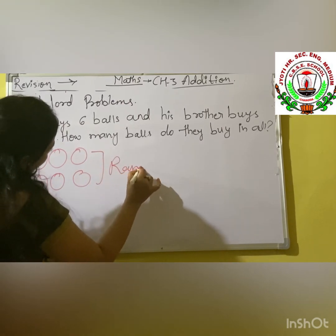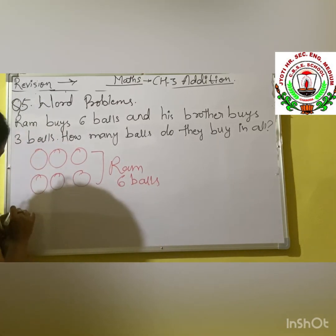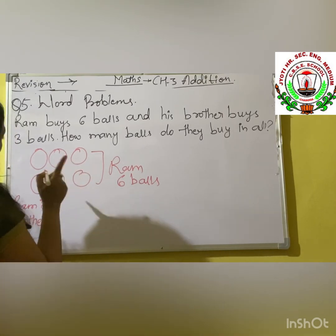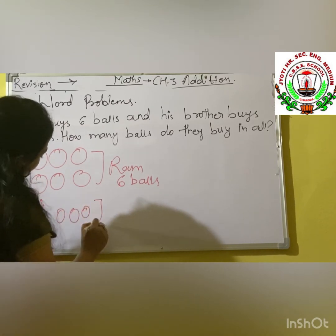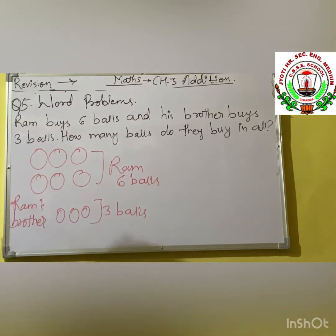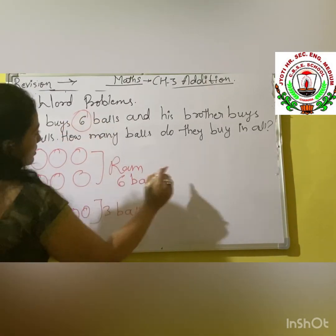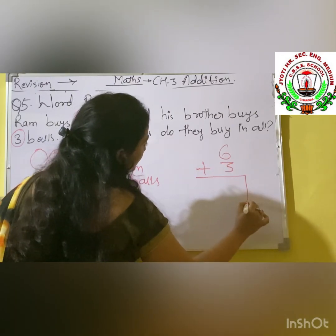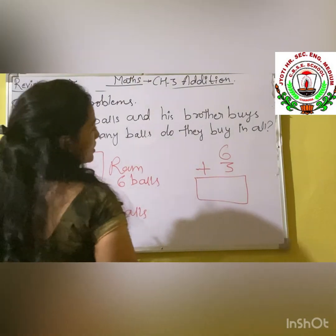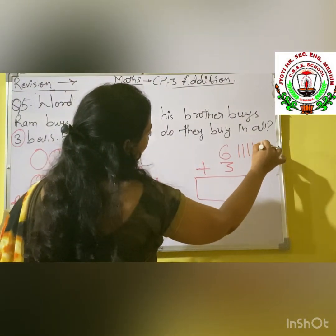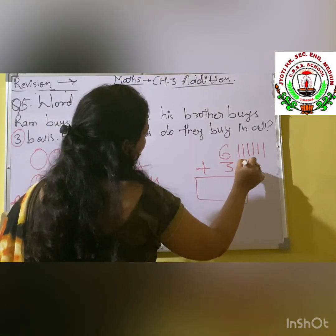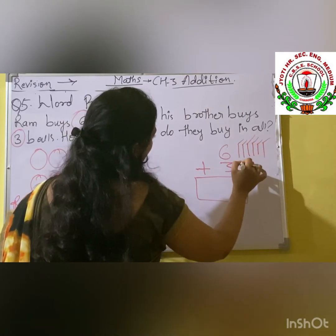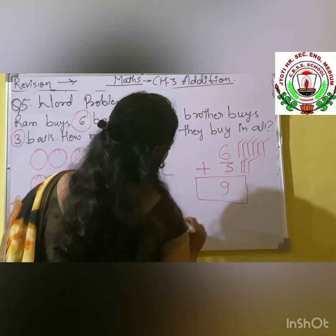Ram has 6 balls and his brother has 3 balls. All together we count. So we write 6 plus 3. We draw 6 strokes: 1, 2, 3, 4, 5 and 6. Now for 3: 1, 2, 3. We count all together: 1, 2, 3, 4, 5, 6, 7, 8, 9. We are having our answer — 9 balls.